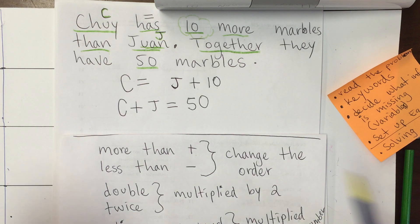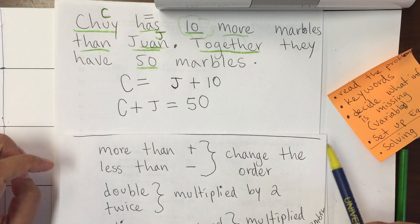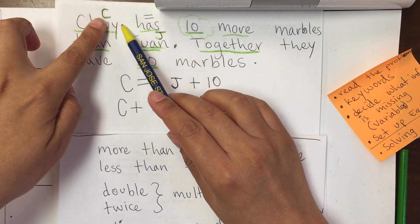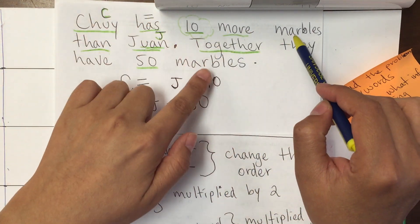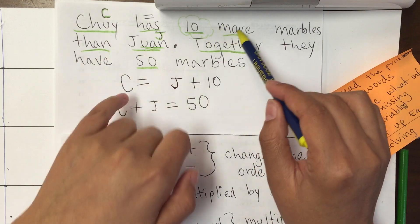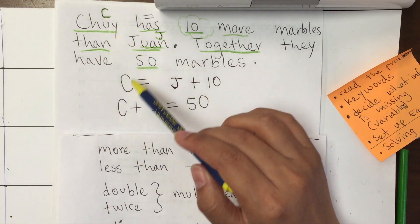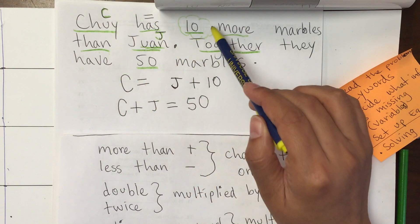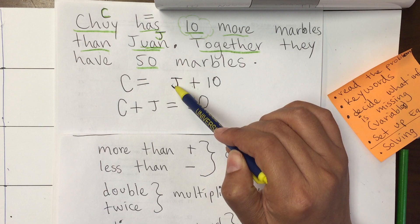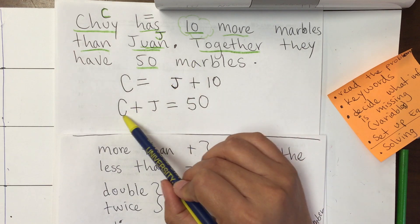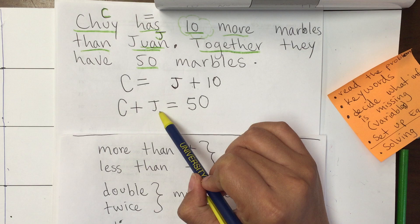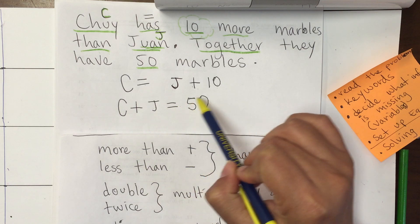I hope that wasn't confusing because of that changing of order. Remember, you're just writing the comparison as the sentence goes, keeping in mind that you write backwards for 'more than' and 'less than.' Chuy has 10 more than Juan: C = J + 10. Together — meaning we add them — they have 15: C + J = 15.